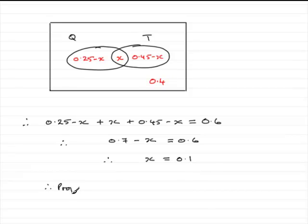So therefore, the proportion of students who read both newspapers equals 0.1. All right, and that brings us now to the end of the first part of the question.